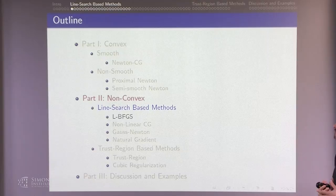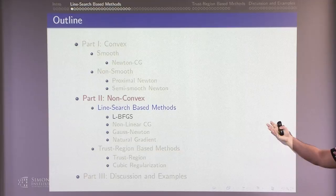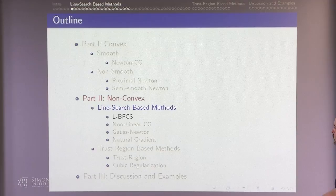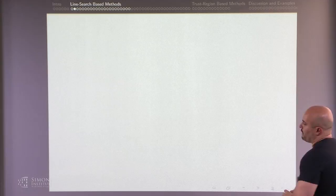One class is line-search-based methods, which involve many different methods. I'm only going to talk about BFGS, Gauss-Newton, and natural gradient. BFGS is actually one of the very few second-order algorithms being used quite a bit in machine learning. Most people have heard of BFGS.